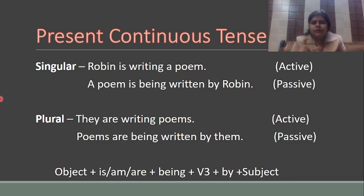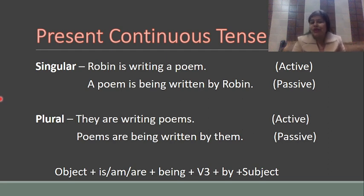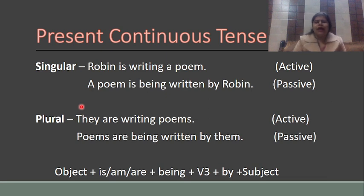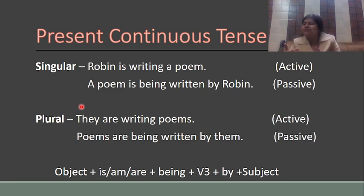Next is present continuous tense — something is happening right now. For example, I'm teaching you and you're listening to me. Singular: 'Robin is writing a poem.' In passive form: 'A poem is being written by Robin.' We take the object, copy 'is,' add 'being,' then the third form of the verb, then 'by,' then the subject.